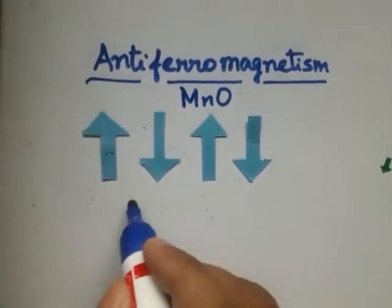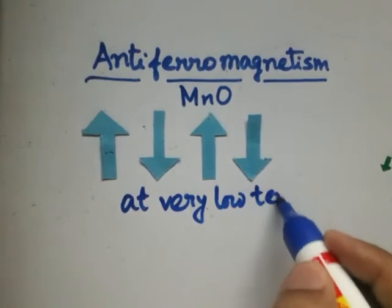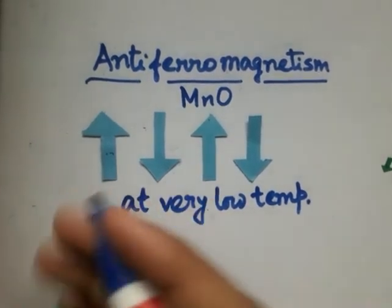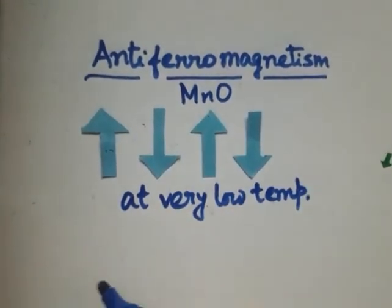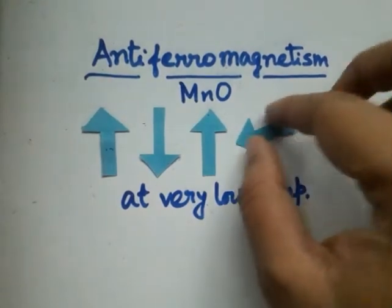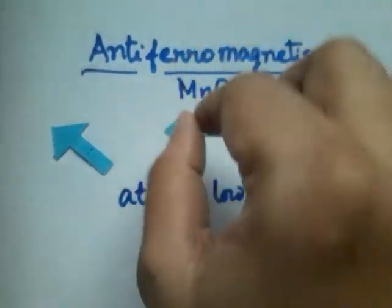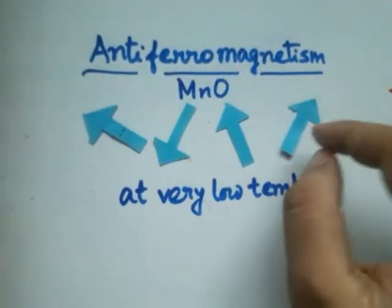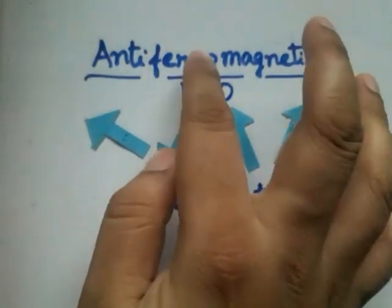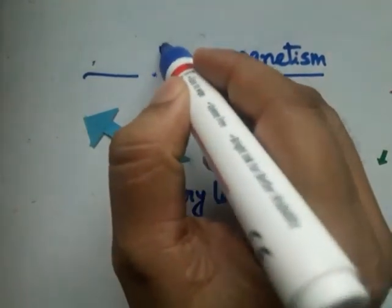This ordered arrangement exists at very low temperatures. If we raise the temperature gradually, we see that this arrangement is no longer possible and is destroyed, so that the domain spins are now randomly oriented in every direction. Eventually, the substance now acts as a paramagnetic substance.